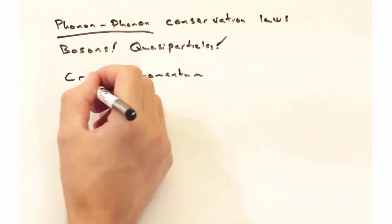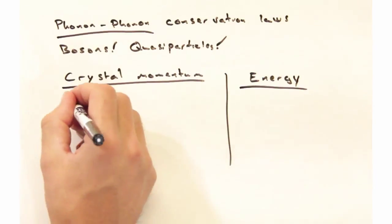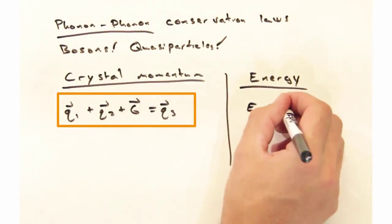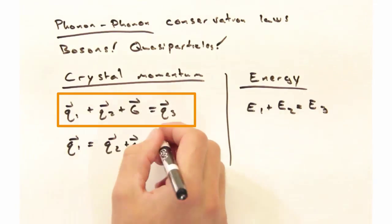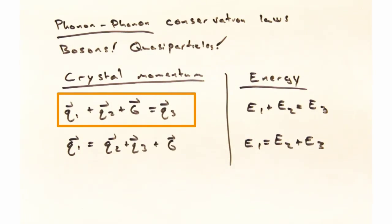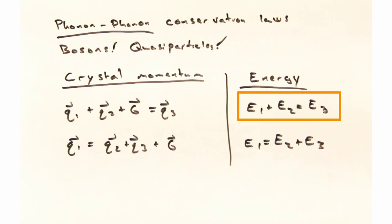For example, in terms of conserving crystal momentum, I could have phonon 1 and phonon 2 plus some reciprocal lattice vector g, because of this whole quasi-momentum business, and those two phonons could come together and form phonon 3. Not only do we conserve crystal momentum in this way, but we also conserve energy, so E1 plus E2 equals E3.